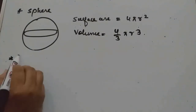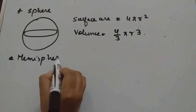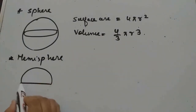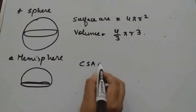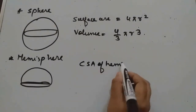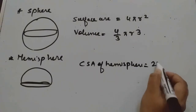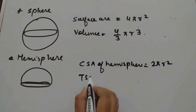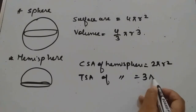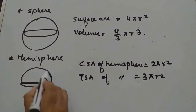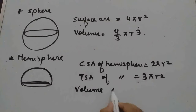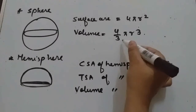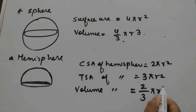Now in a hemisphere, CSA and TSA will be different. CSA of a hemisphere is 2πr², and TSA of the same will be 3πr². This is because we have 2πr² for the curved surface and one more circular surface to add, making it 3πr². Volume of a hemisphere will be half of the sphere's volume, so 2/3 πr³.